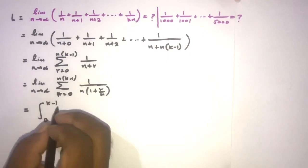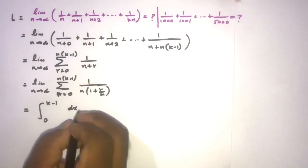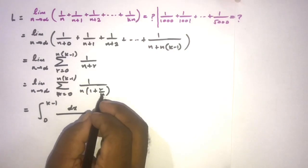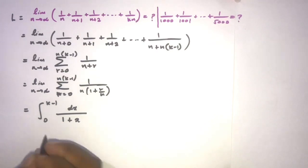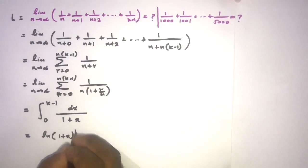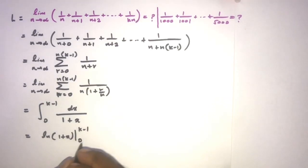Integral from 0 to k minus 1, dx over 1 plus x, instead of r over n we know x, so 1 plus x. And we know this is equal to natural log of 1 plus x from 0 to k minus 1.